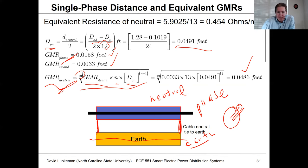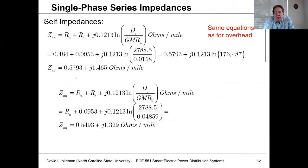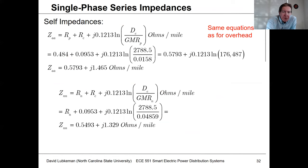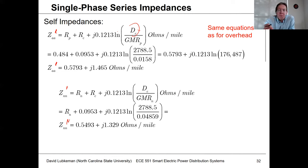Now we calculate the impedance terms. The self-impedance Z_AA = R_P + R_e + j·0.1213·ln(D_e / GMR_P), where D_e is the Carson's correction earth-return distance. Using the GMR for the phase conductor, this gives Z_AA = 0.5793 + j1.465 ohms per mile.